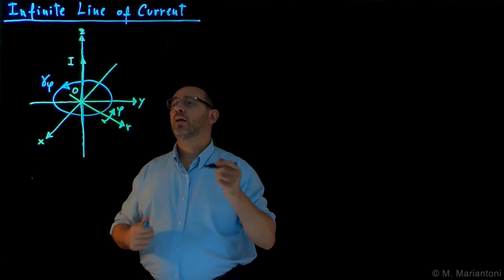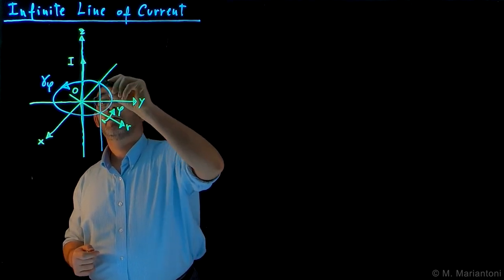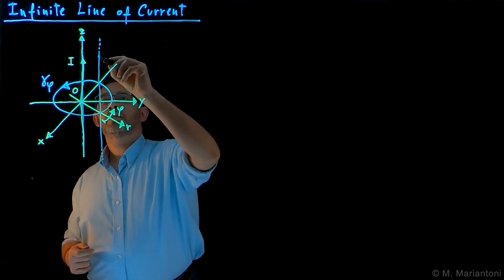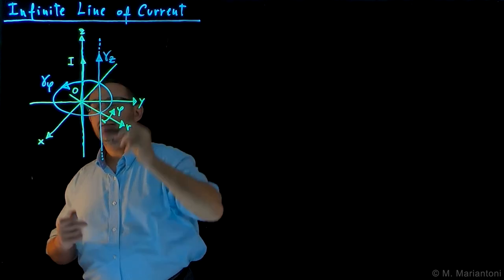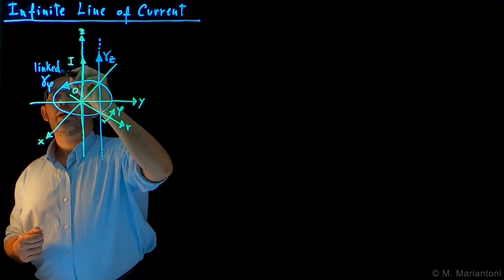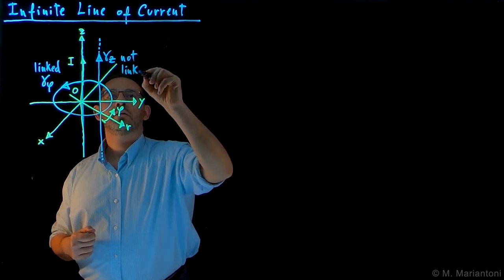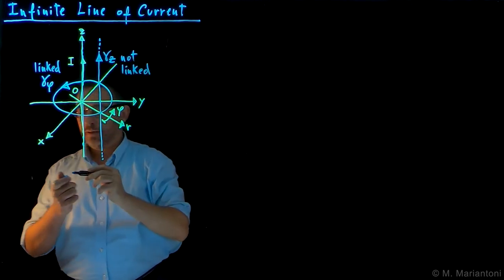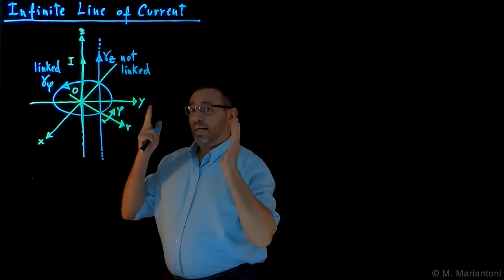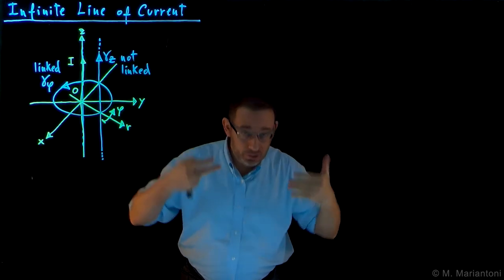We will also need another line, which we call gamma z, parallel to the z-axis — so it is an infinite line oriented upward. While gamma phi is linked with the line of current, gamma z is not linked with the current. You will see at the very end of this video how we are going to need these two lines when applying Ampere's law.